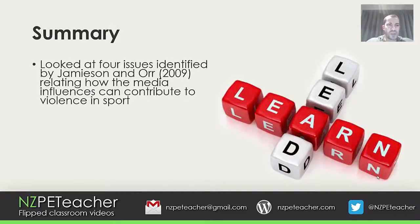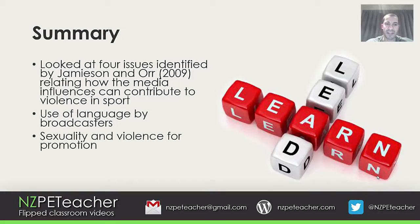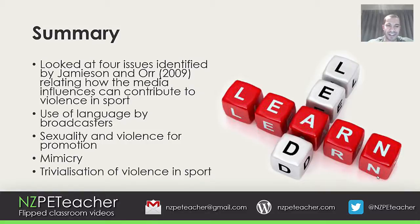To summarize, we looked at four issues that Jameson and Orr identified in 2009 that related to how the media can contribute to violence in sport: the use of language by broadcasters, sexuality and violence for promotion, mimicry, and the trivialization of violence in sport. Complete your sheet, get a question written down, and we will discuss this in our next theory lesson. Thank you.